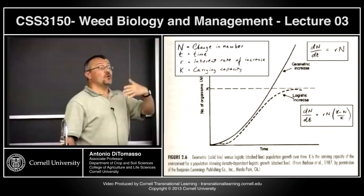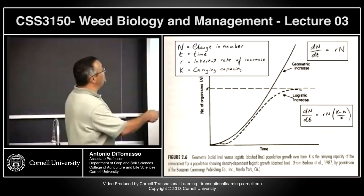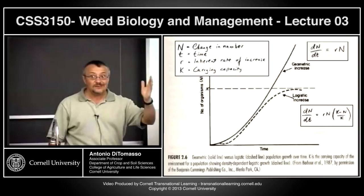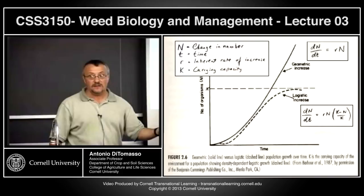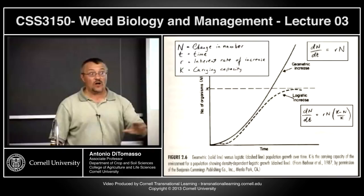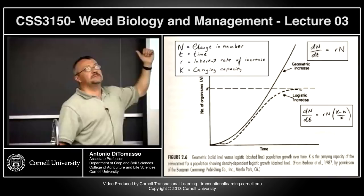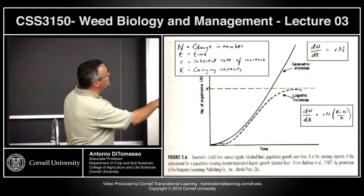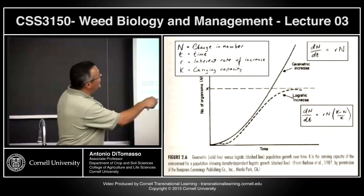Carrying capacity is the total population size that a unit area can support based on available resources. That is the key question globally right now — how many people can this planet hold? Sooner or later, whether it's eight or nine billion, it's going to level off. This happens in plants and animals all the time. With white-tailed deer, for example, after a while everything gets browsed and the population plateaus. This is referred to as logistic increase — it increases steeply at first, almost exponentially, then reaches K, the carrying capacity.